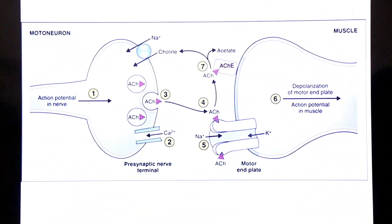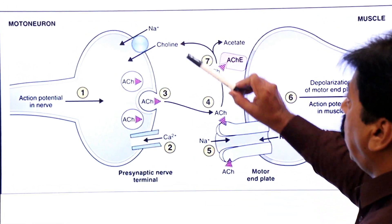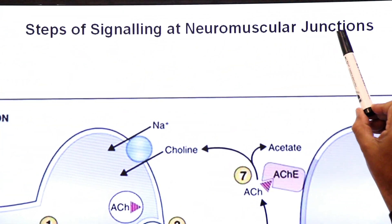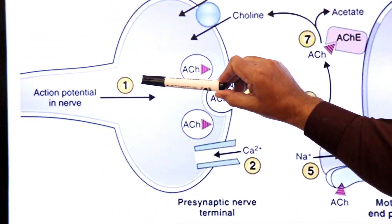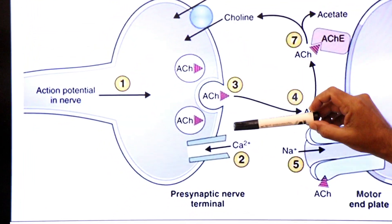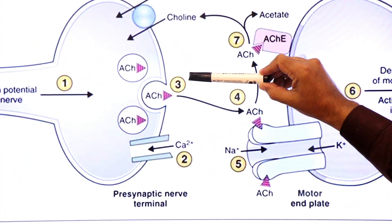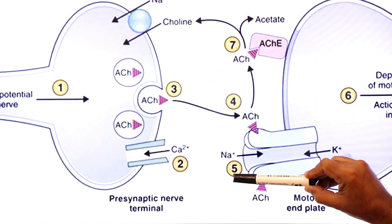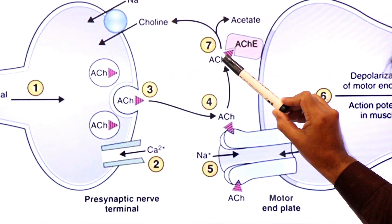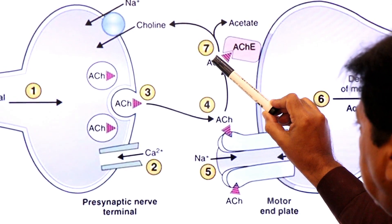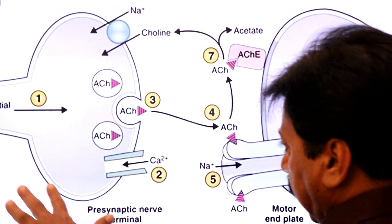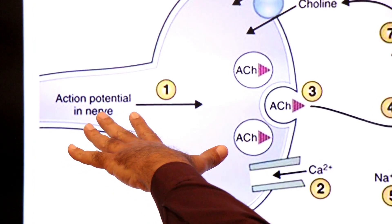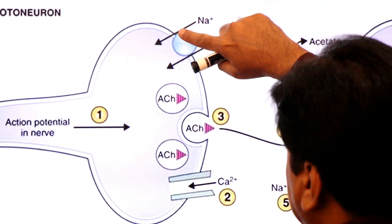There are 7 steps of signaling at the neuromuscular junction. Step 1: the action potential travels and reaches the axon terminal. An electrical signal from the brain becomes an action potential that reaches the ending of the neuron — the axon terminal.